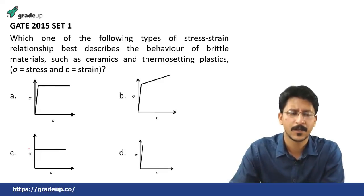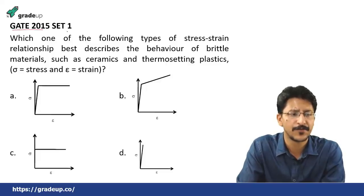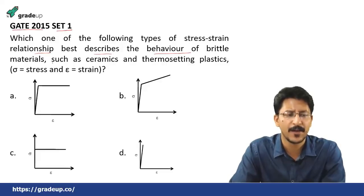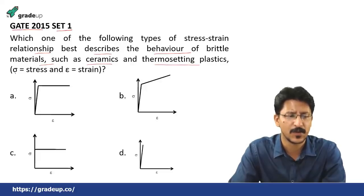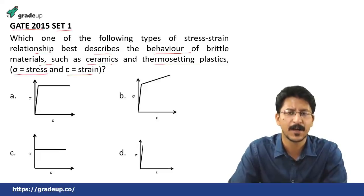Let us begin with the questions. GATE 2015, Set 1: Which one of the following types of stress-strain relationship best describes the behavior of brittle materials such as ceramics and thermosetting plastics? Here, epsilon is the strain and sigma shows the stress.